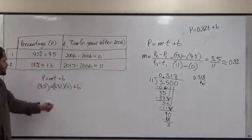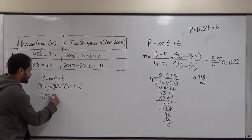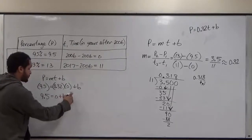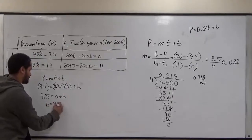Now this times this is 0 and this is just 9.5. And we have our solution for the y-intercept value, which is 9.5.